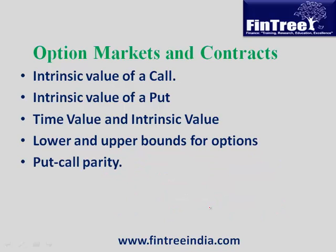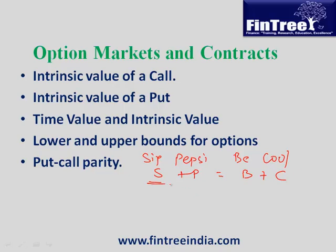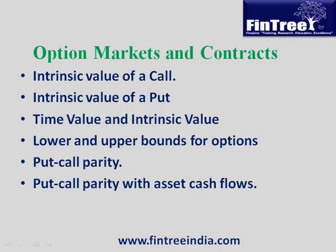Next: put-call parity. We have an easy memory technique: 'Sip Pepsi, Be Cool.' This gives us the formula: S + P = B + C, where S is the stock price, P is the put option premium, B is the bond (i.e., the present value of the strike price = X / (1 + rfr)^T), and C is the call option premium.